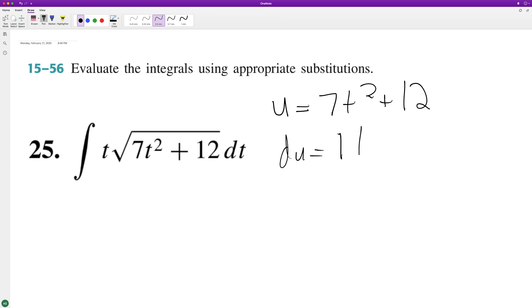du in this case is going to be equal to 14t. And if you look here, we only have a t, there's no 14. So to get du equal to dt, we need to multiply by 1/14th.